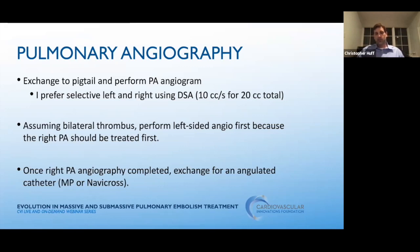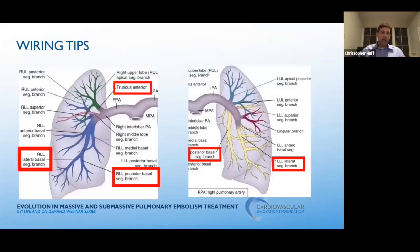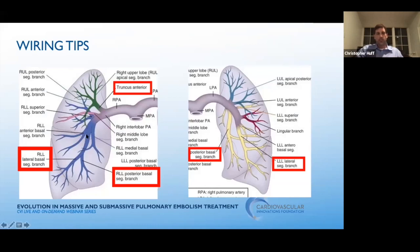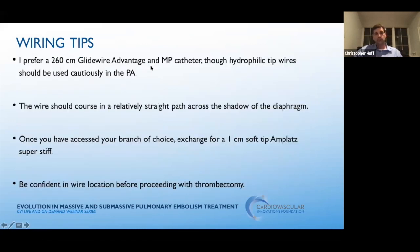Once I've completed PA angiography with a pigtail, I exchange for an angulated catheter like a multipurpose or an Abbey Cross. When wiring the pulmonary arteries, it's important to know your anatomy. Almost always, you'll place your wire in one of the basal branches — the lateral basal or posterior basal branches. That's usually where the clot is, starting before it extends back into the main PA. These are big branches and safe placement for your wire. These vessels will cross the shadow of the diaphragm, so you know you've made it to the basal aspect of the lung when your wire crosses that shadow.